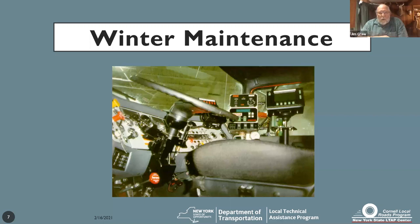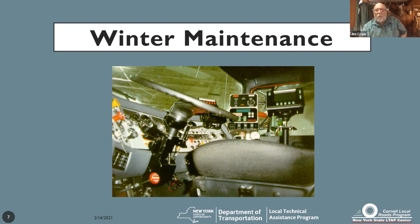We're going to talk about liquids and solids. This is a picture of a newer type truck — it's totally automated. Ground speed control is extremely important. If you don't have ground speed control, you really should get it. All your vehicles should be calibrated at least once a year. If you do any maintenance to your truck — hydraulics, change the chain — they should be recalibrated. You can save a lot of material if you stay calibrated.